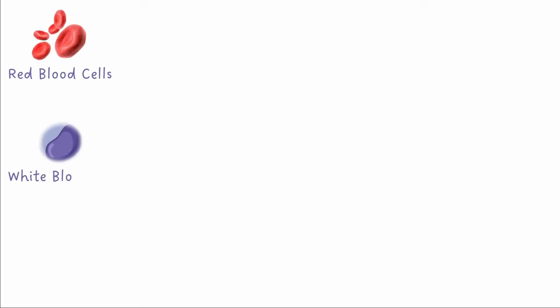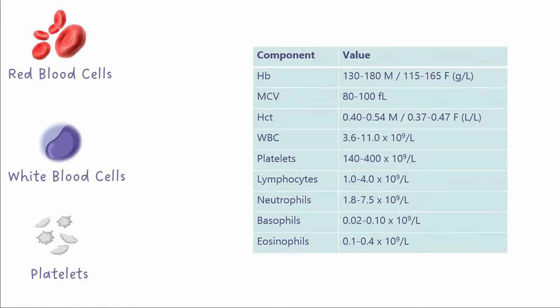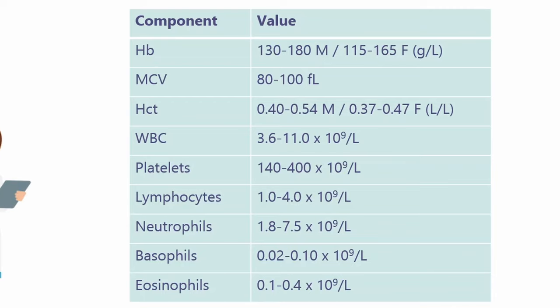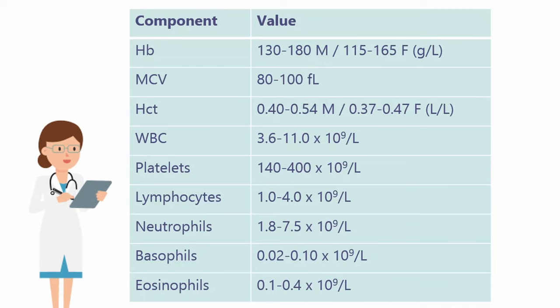To summarise, the full blood count analyses the red cells, white cells, and platelets, which make up the cellular components of our blood. There are various causes for high or low levels of these components, so a full blood count can help narrow your differentials and also monitor ongoing treatment.